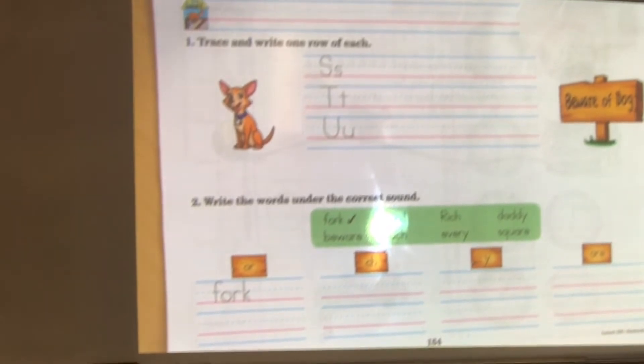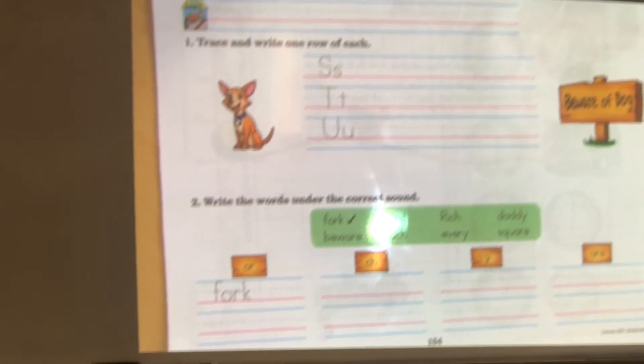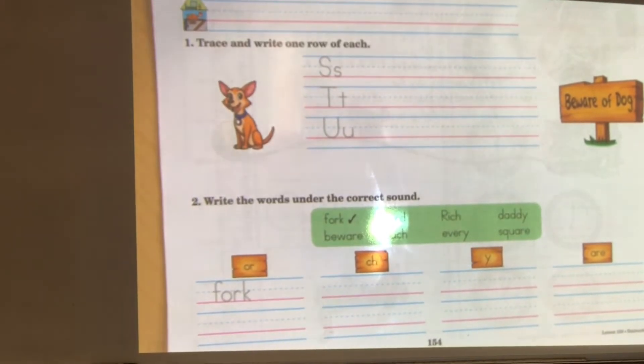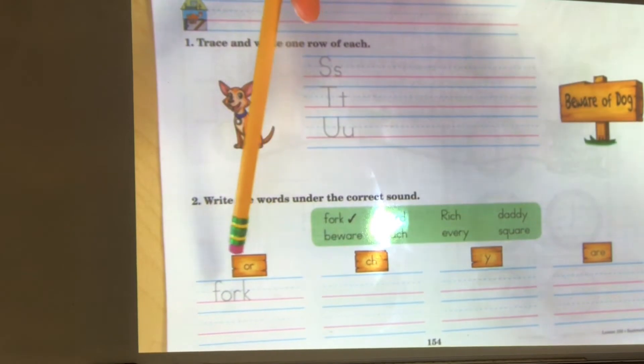Let's take a look at section two. Write the words under the correct sound. In the green box you see the word fork, lord, rich, daddy, beware, ouch, every, and square. And over here you see some special sounds.